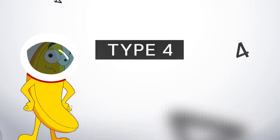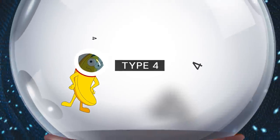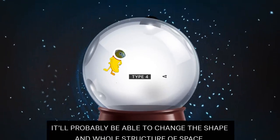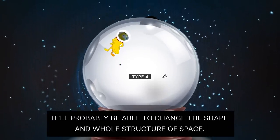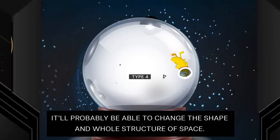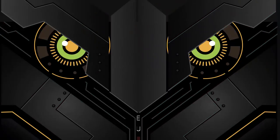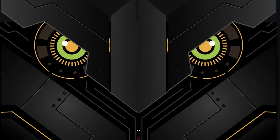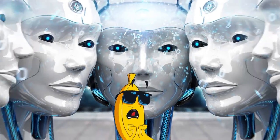Type 4, also known as the universal culture, can harness the energy from the entire universe. It'll probably be able to change the shape and whole structure of space. You have to get a whole universe's worth of energy to get this advanced. Can such a great amount of energy make post-biological cybernetic beings immortal or at least invincible? What do you think? Our civilization would probably be long since gone by that point.